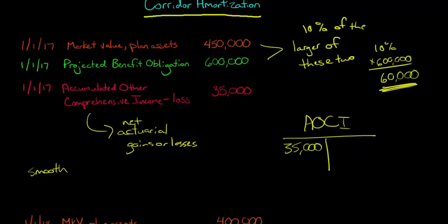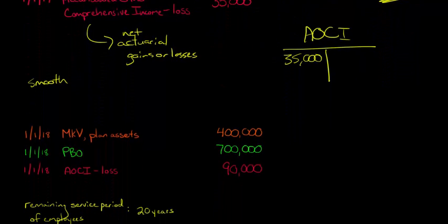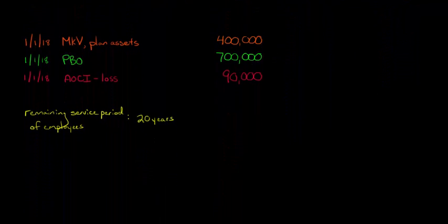Now let's look at another year. Let's say that now the market value of the plan assets is $400,000, and the PBO is $700,000, and then we've got a new balance for our accumulated other comprehensive income.